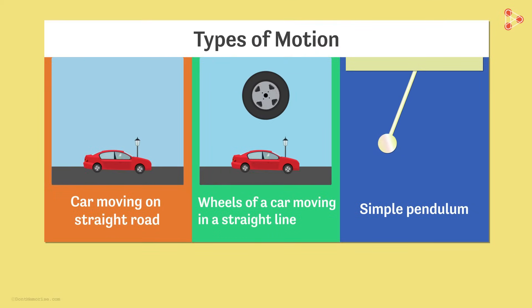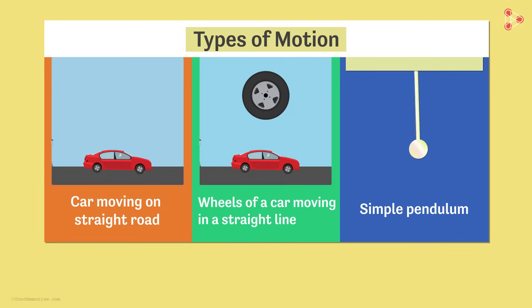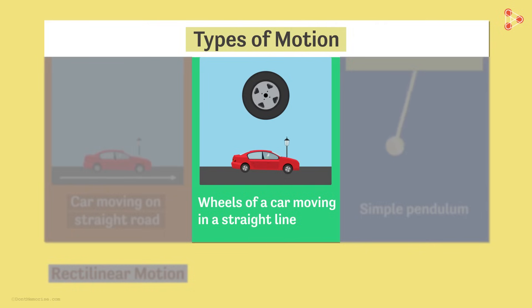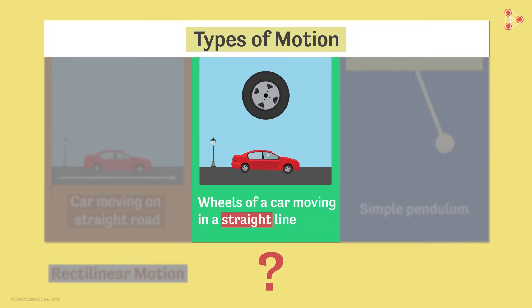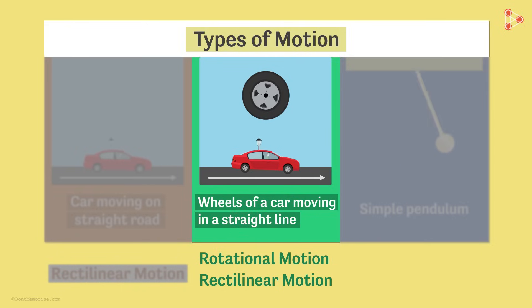Here are a few examples of motion in everyday life. Go through them and identify what type of motion each one represents — note that one example could have more than one type. The first is clearly rectilinear motion: a car moving along a straight line. The second is interesting — the wheels of an automobile are undergoing both rectilinear and rotational motion at the same time, since the automobile is moving in a straight line.